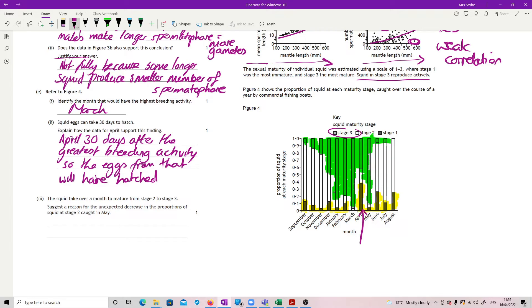Squid can take over a month to mature from stage two to stage three. Suggest a reason for the unexpected decrease in the proportions of squid at stage two caught in May. Yeah, we have this big chunk of stage one in April. So I'm expecting that all of these guys should go to a big white block in May, and it's not. So something must have happened to a pile of those stage one. So you're just going to go with anything, anything that's because it just suggests a reason. So go for your biggies for controlling population. Predation.